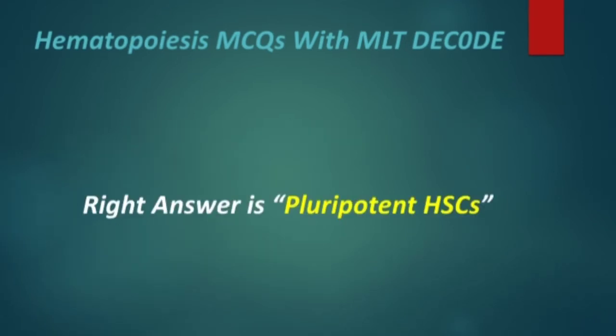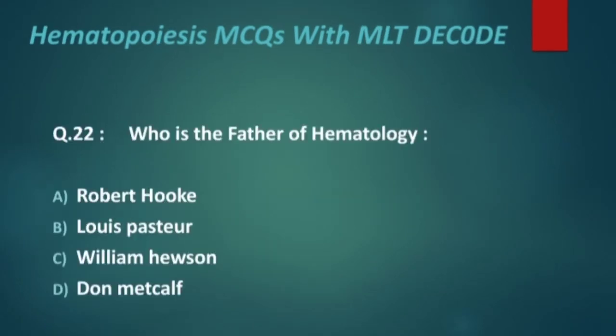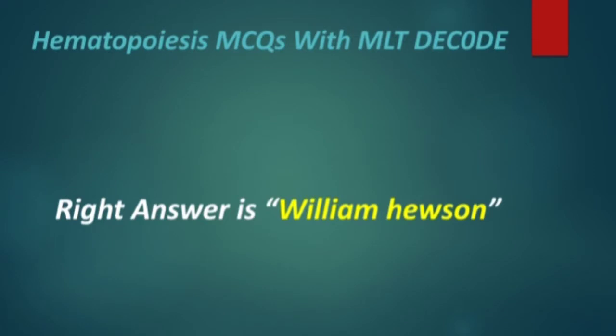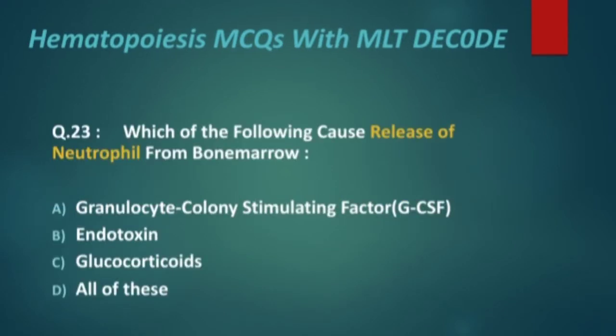Next: who is the father of hematology? Options are Robert Hooke, Louis Pasteur, William Hafson, and Don Matt Kalf. The right answer is William Hafson. Next: which of the following causes release of neutrophils from bone marrow? Options are granulocyte colony stimulating factor, endotoxin, glucocorticoids, and all of these.